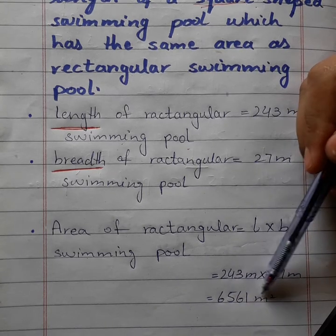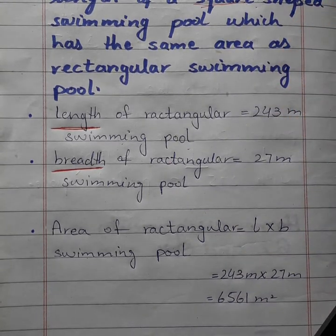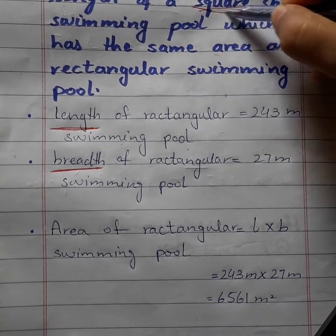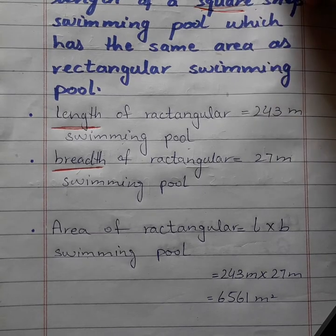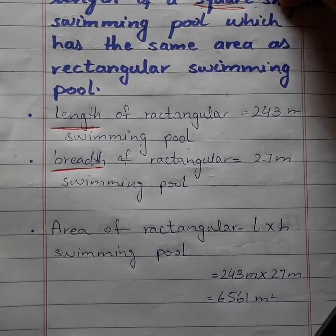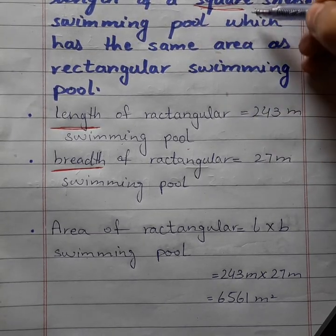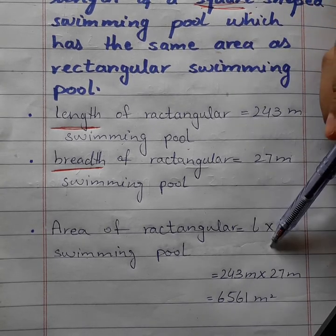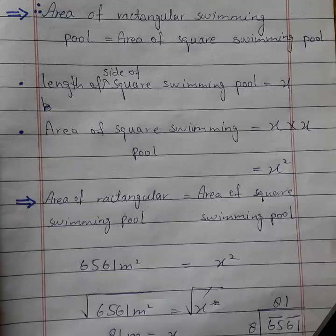Length ko multiply karenge breadth se toh answer 6561 square meters aayega. Humne area of rectangular swimming pool kyun find out kiya hai? Kyunki unhone kaha hai ke jo square ka area hai woh equal hai rectangle ke area ke. Toh sabse pehle humein rectangular area find out karna hoga, toh hum usko square ke equal karenge.